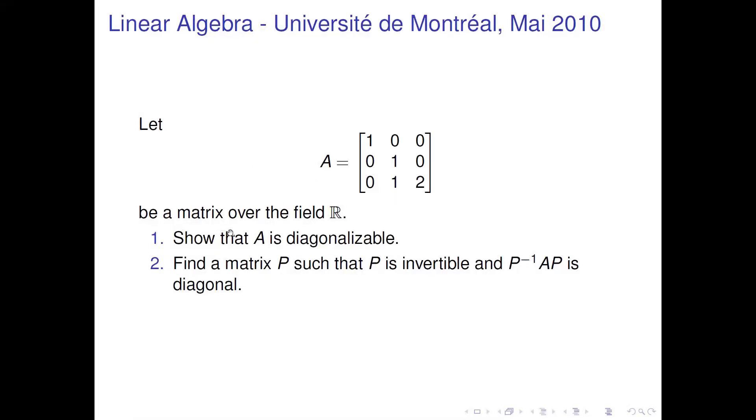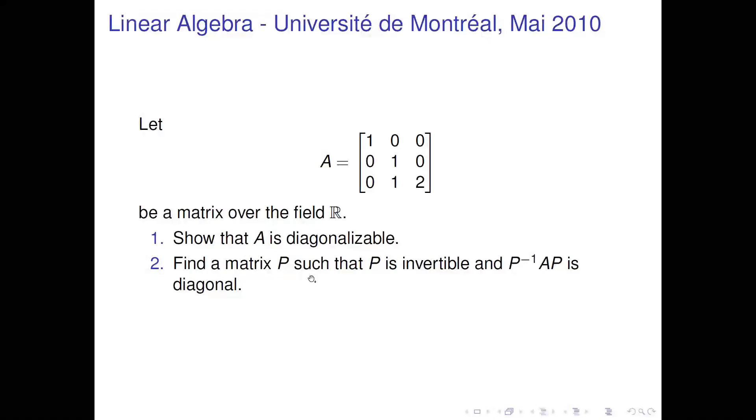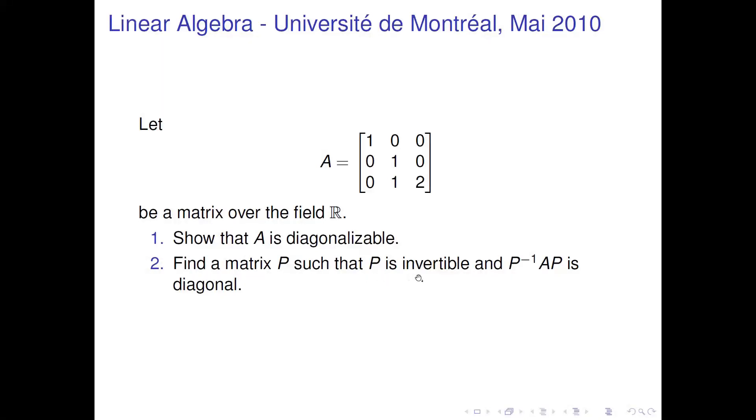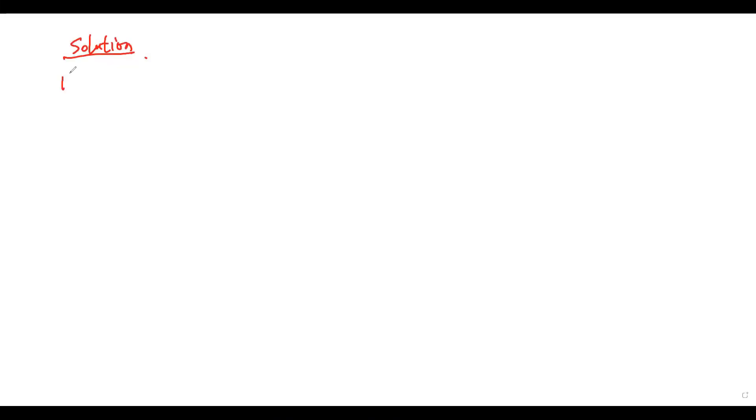There is a matrix A over the field R. Question 1: Show that A is diagonalizable. Question 2: Find a matrix P such that P is invertible and P inverse times A times P is diagonal.